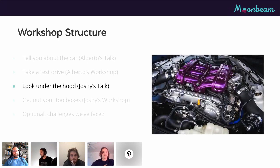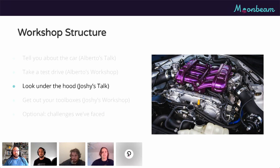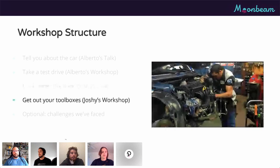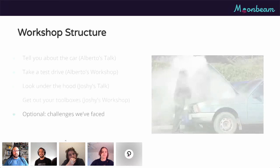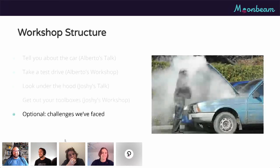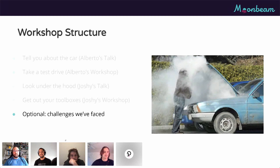After the test drive with Alberto, we're going to pop the hood on the car and look at the more detailed architecture — what parts come from Frontier, where they fit into the Substrate node, and how they interact. Once we have those fundamentals down, we can get out our toolboxes and start hacking: I'll teach you how to take a regular Substrate node template and turn it into an Ethereum-compatible chain like Moonbeam using Frontier. We'll also have time at the end to talk about challenges we faced.